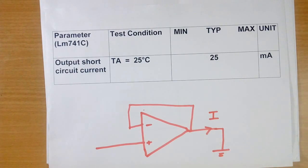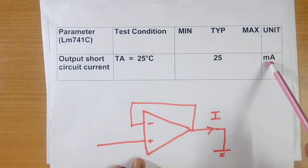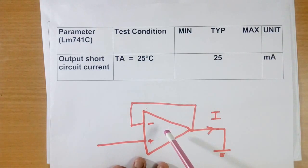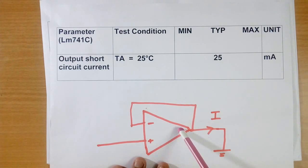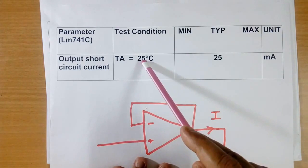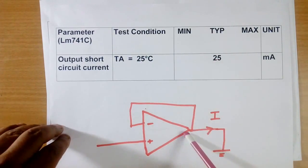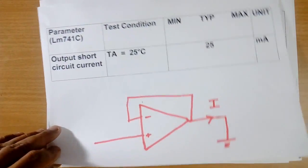Output short circuit current of the 741C is 25 mA. This IC has special current limiting circuit at the output. Because of that, even if output is short circuited, current will be limited to 25 mA. This is at 25 degree; at different temperature, current may be little different. This is to protect the IC from failing.